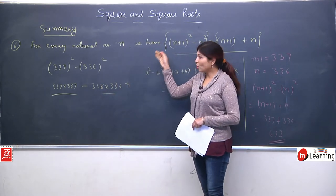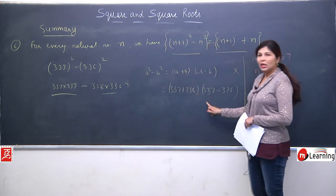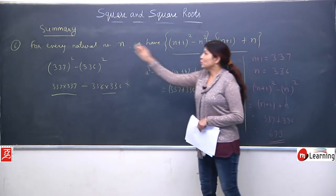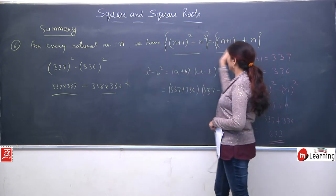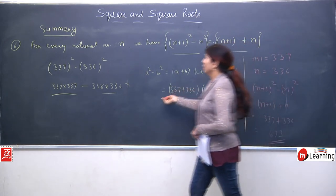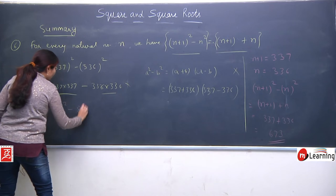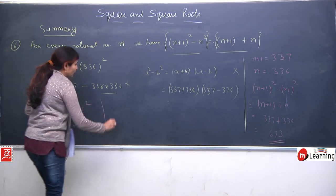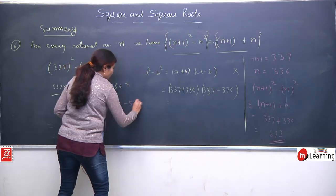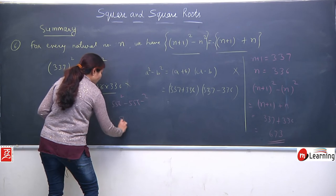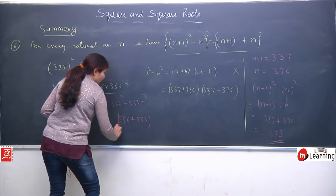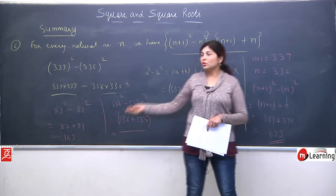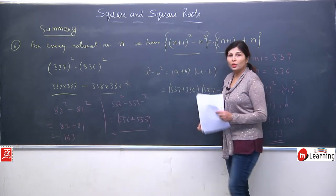When you recall this property while solving, you'll immediately recognize when to apply it. For (n+1)² - n², just add the two consecutive numbers. Another example: 82² - 81² = 82 + 81 = 163. And 556² - 555² = 556 + 555 = 1111. This sixth property is very very important and a great shortcut.